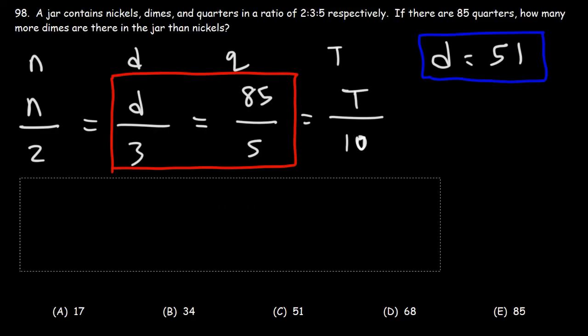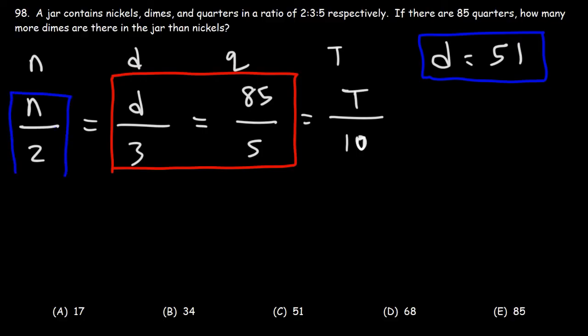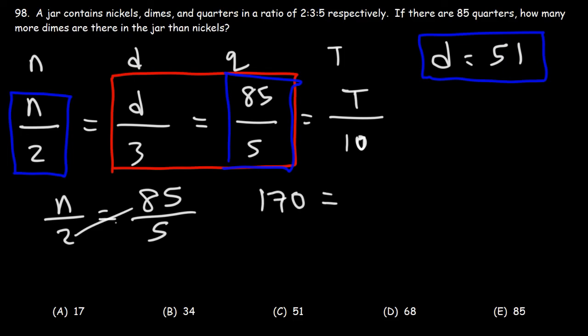Now let's calculate the number of nickels. So we're going to set this fraction equal to this one. n over 2 is equal to 85 divided by 5. So we have 2 times 85, which is 170, and that's equal to 5 times n. Dividing both sides by 5, we have that 170 divided by 5 is 34.